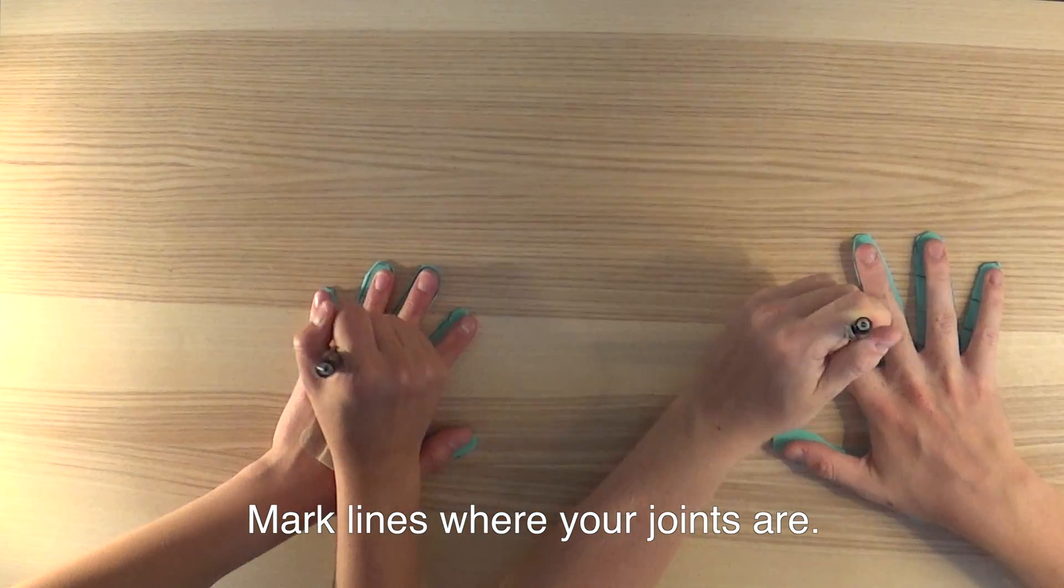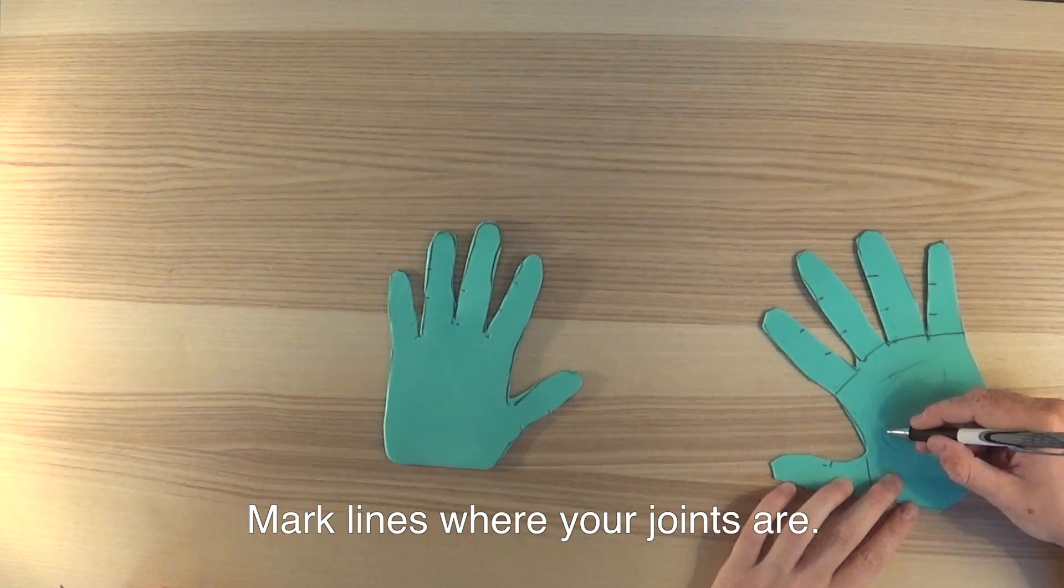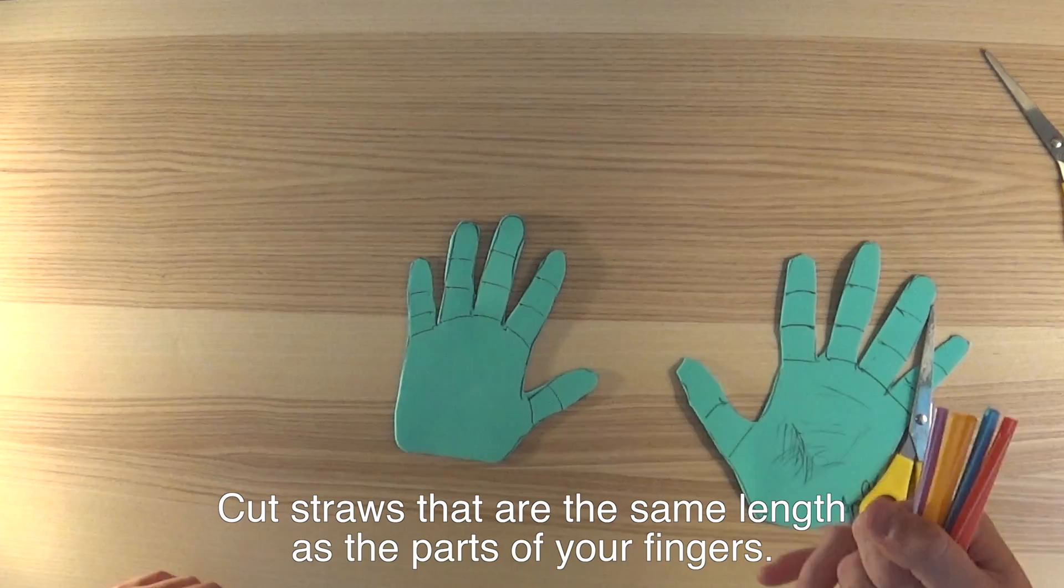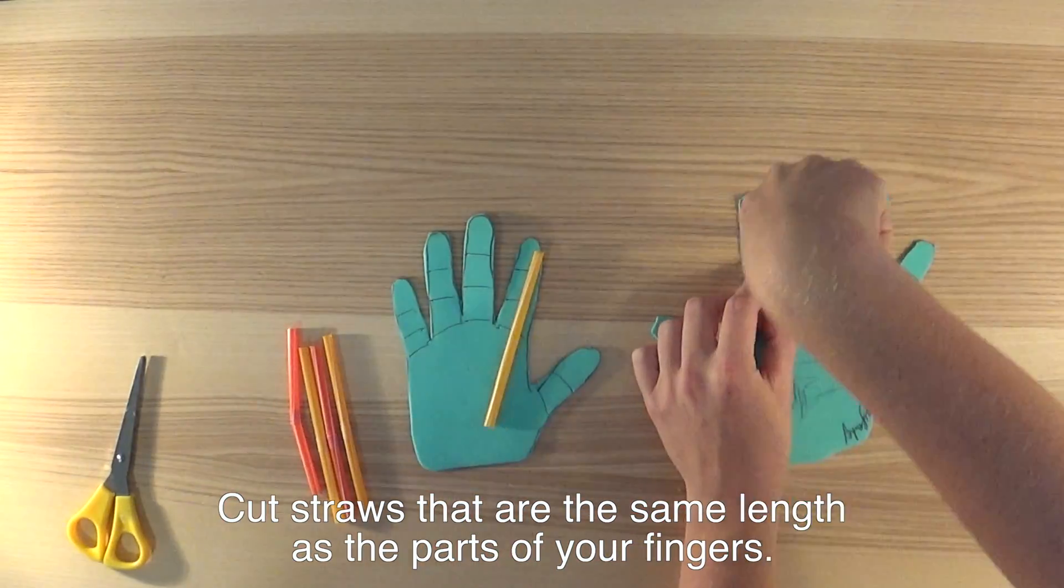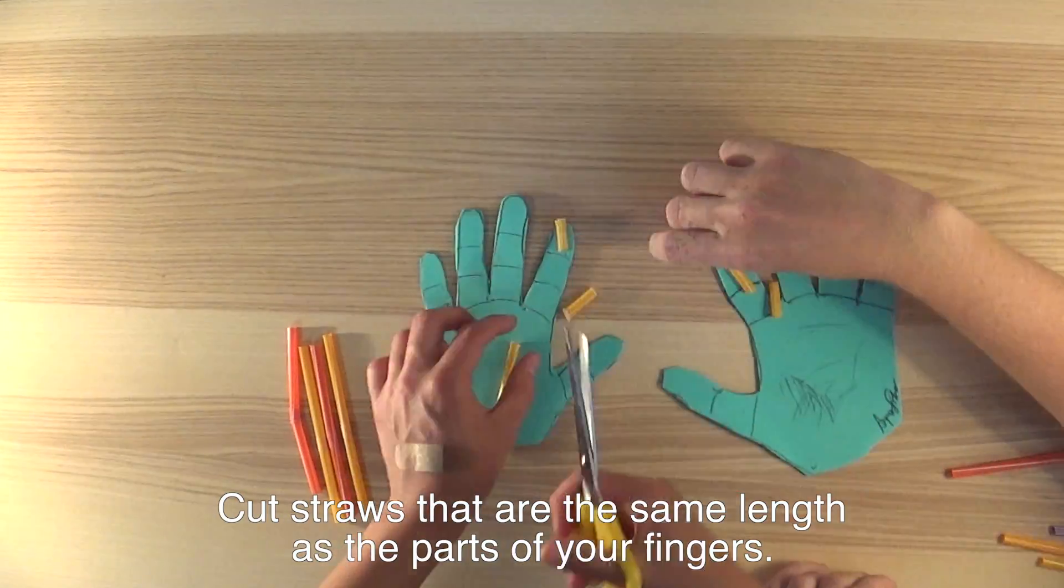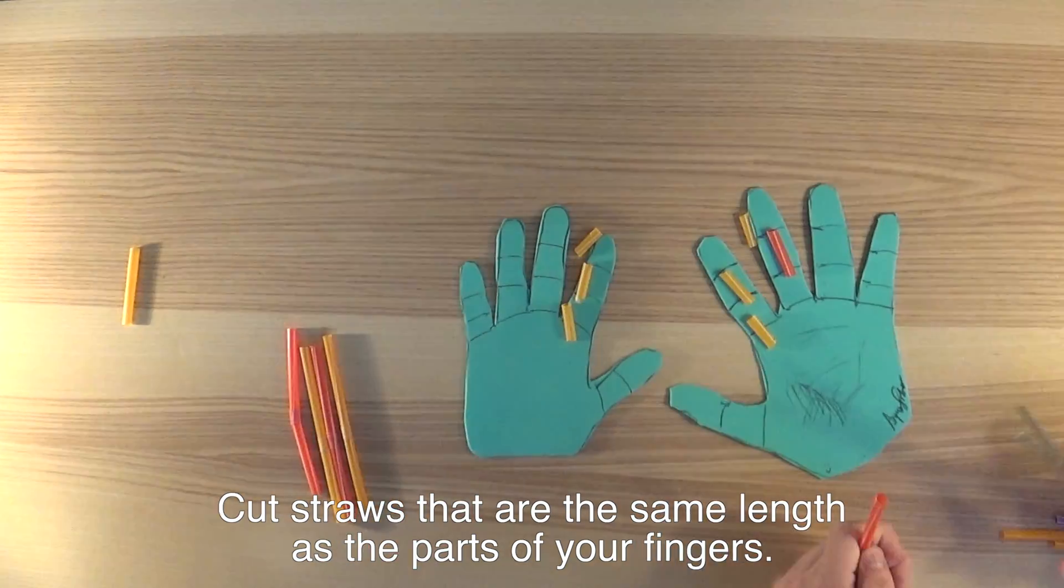Mark the lines where your joints are onto the foam. Cut straws that are the same length as the parts of your fingers. These will act as our bones. We cut the straws to each of the joints so that the bones can move when we bend the hand.